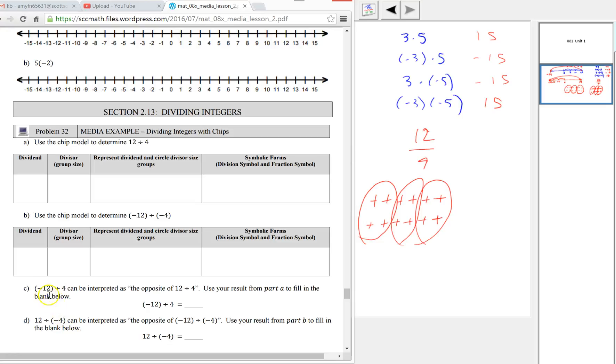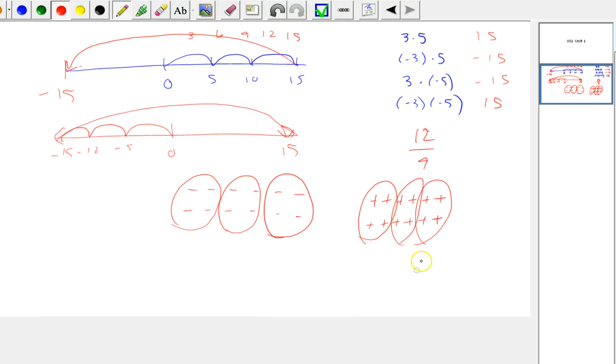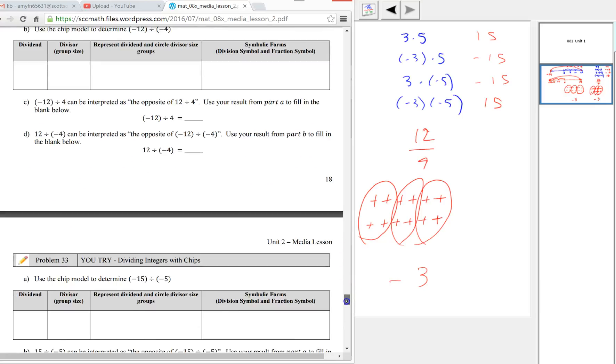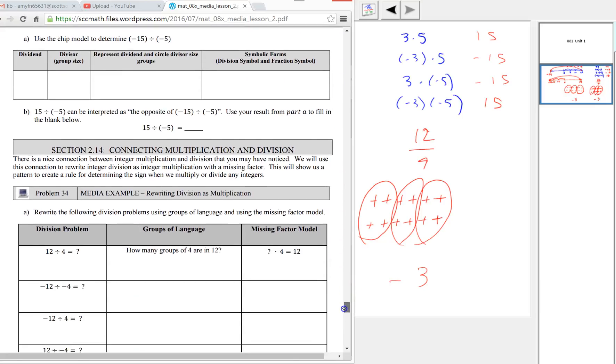When the signs are different, we talk about finding the opposite of the result. Negative 12 divided by 4, we could think of this, our result is 3, and we take the opposite of our result, which is negative 3. Here, the result is 3, the opposite of that is negative 3. There's ways to do this one with chips, but it could be pretty complex and make things worse rather than better.